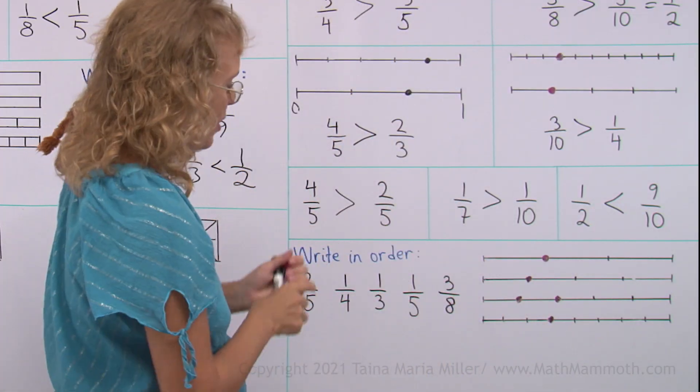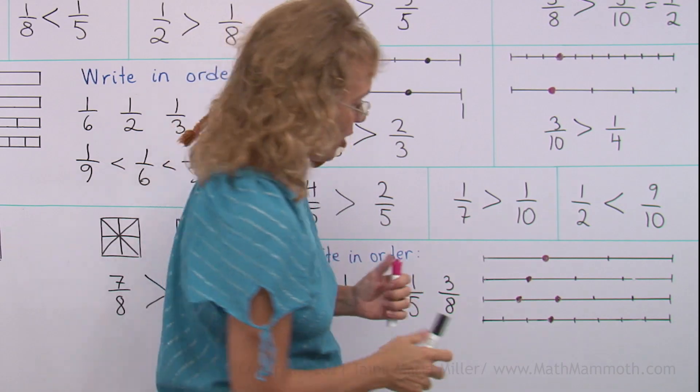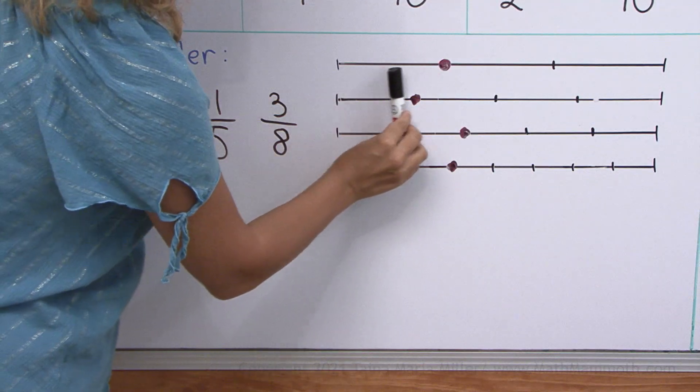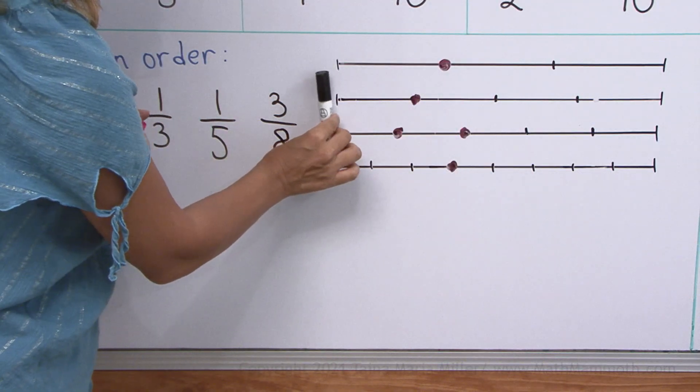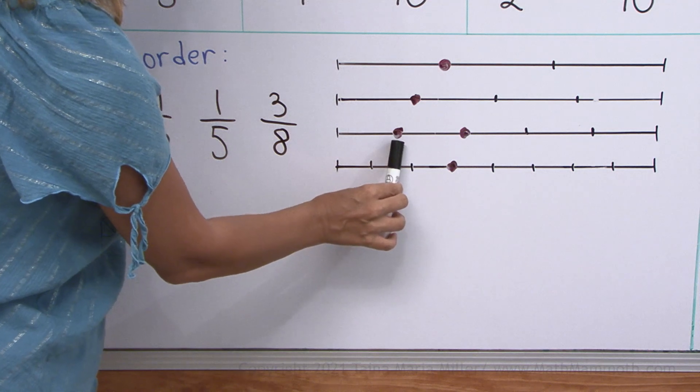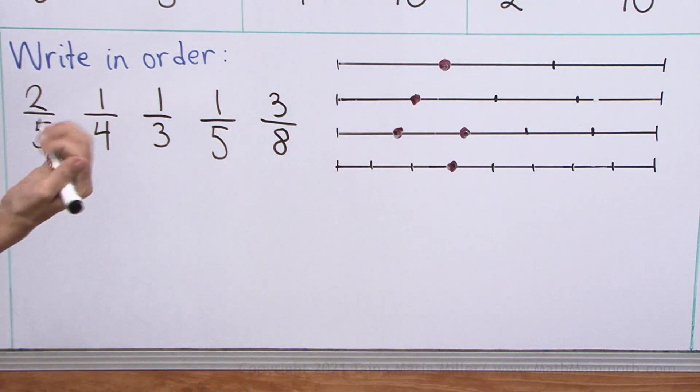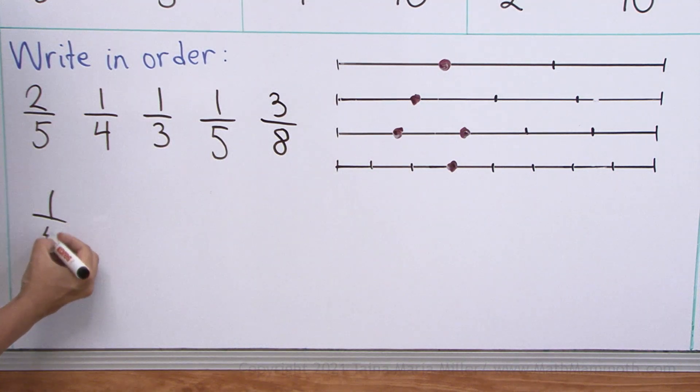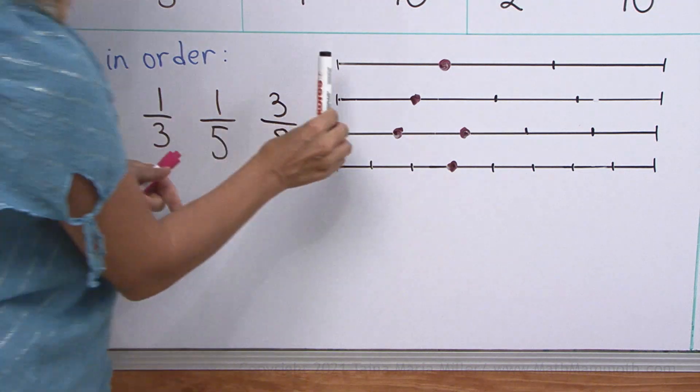So now, which one is the smallest fraction? We come from here, go towards there. Which dot do we hit first? It's this one here. So that's one-fifth, right?